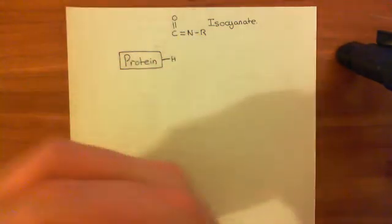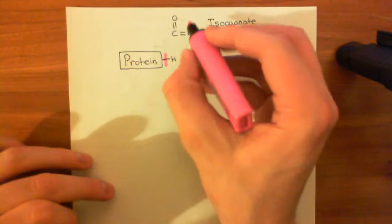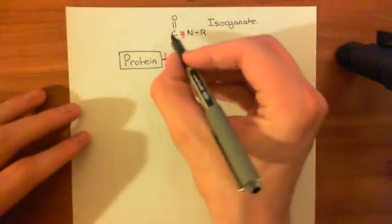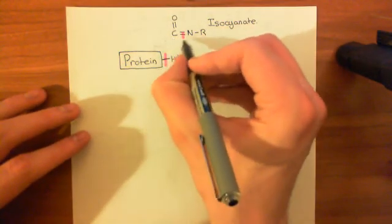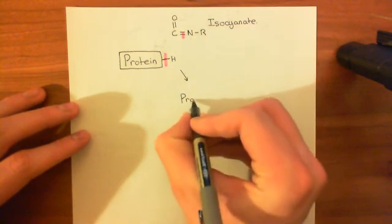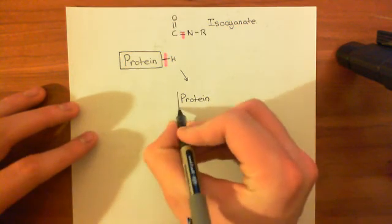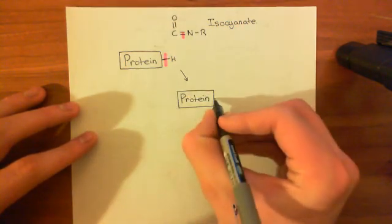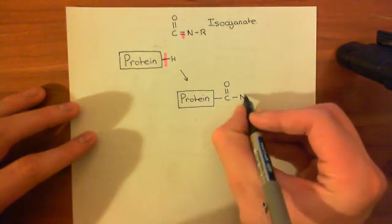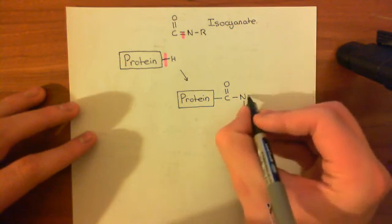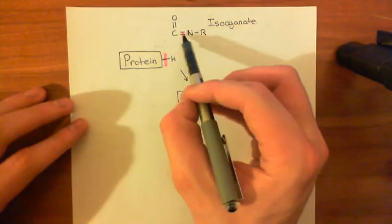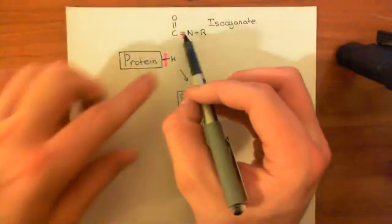Now, what can basically happen is you can cleave. So what's going to happen is you're going to cleave this bond between the protein and the hydrogen. You're also going to cleave this bond between the carbon and the nitrogen. What you're then going to do is bind this carbon to the protein and then bind this hydrogen to the nitrogen. So what you're going to go to is you'll have the protein here. And then attached to it, what you'll have is the carbon with its double bond to the oxygen. The nitrogen here now singly bonded to it. The nitrogen is bound to the hydrogen and then also to the R group. So basically, we've cleaved this bond here.